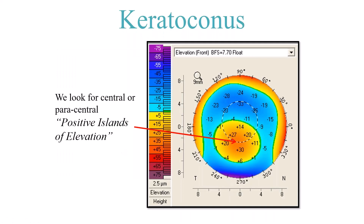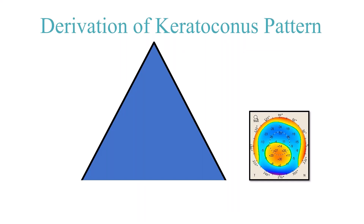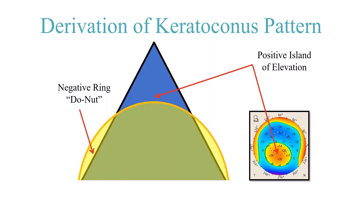Why do we get this pattern for ectatic disease? If we look at just a cone compared to a best fit sphere, the cone is truncated and sits above the sphere — the highest point is the tip of the cone. At the sharp transition point, the most negative value is in the mid-periphery, not the far periphery. That's why you see a positive island surrounded by a sea of blue, with less blue as you go further out to the periphery.